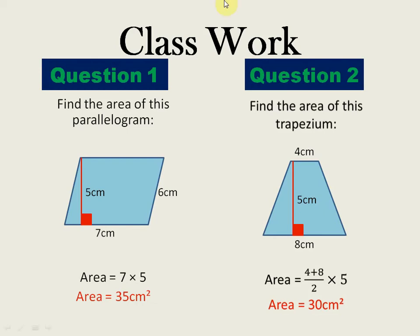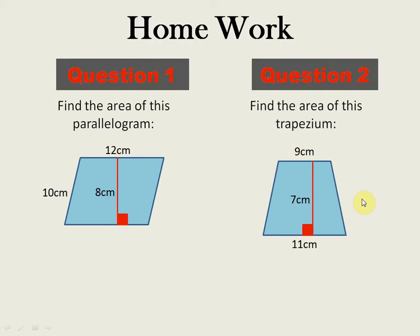You have to memorize the formula — once you do, just apply it to the figure to calculate the area and perimeter. Now there is homework in the next slide. Question number 1 is a parallelogram with base 12 cm and height 8 cm. Question number 2 is a trapezium with parallel sides 9 and 11, and height 7 cm.